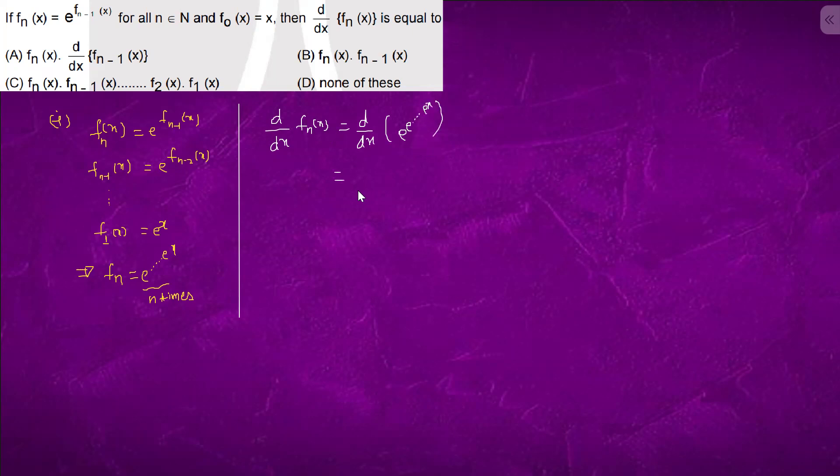So, can we say that e to the power e to the power e to the power x n times, we are left with this term n minus 1 times.